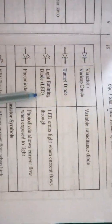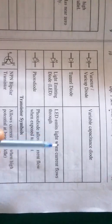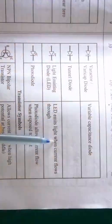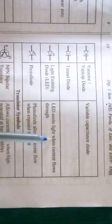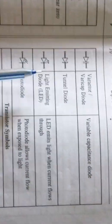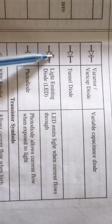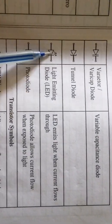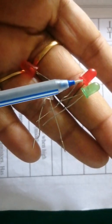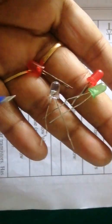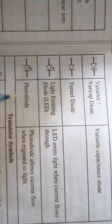Next is the light emitting diode (LED). An LED emits light when current flows through it. The LED symbol is the normal diode symbol with arrow marks indicating emission of light. LEDs are available in different colors such as red, green, and white.